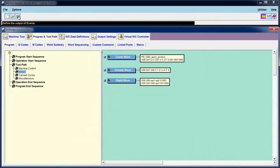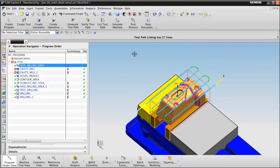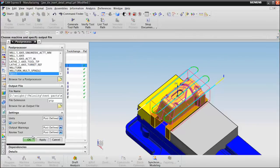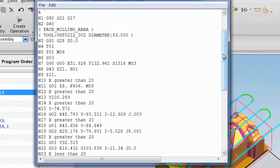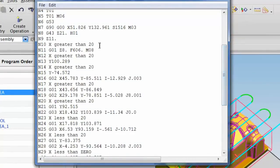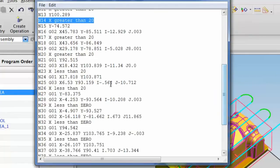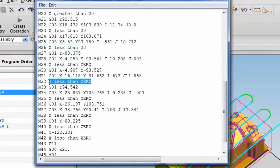Save the post. Remember, this custom command only happens for linear moves, not circular or rapid moves. X greater than 20, greater than 20, greater than 20, less than 20, less than 0.